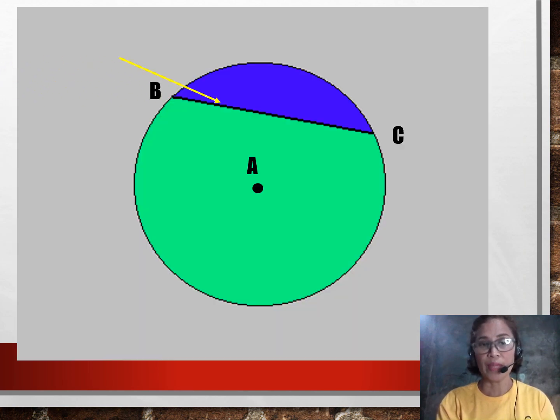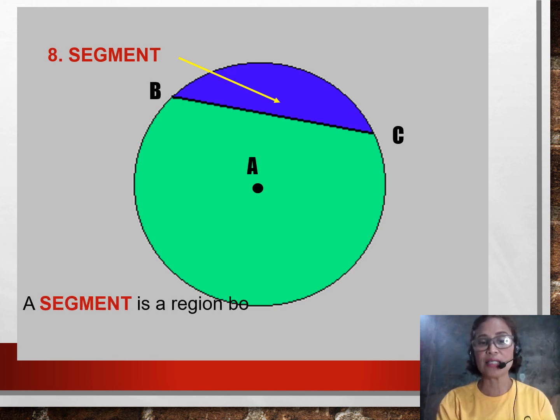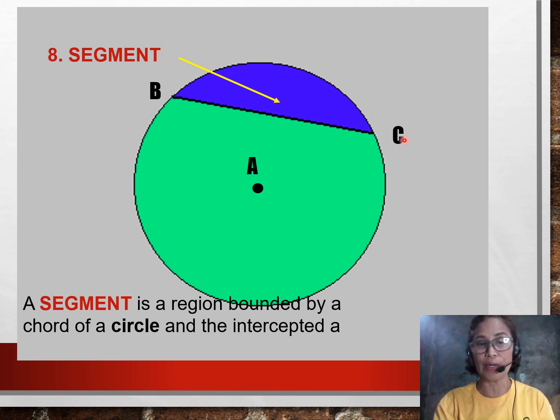Next, number eight, a segment. A segment is different from a sector. What is the difference? A segment is also an area or a region, this blue part, enclosed by a chord and an arc. I have here arc BC and Segment BC enclosing the blue region. The difference of the segment to a sector is that a sector is enclosed by radii while a segment is enclosed by a chord and an arc.